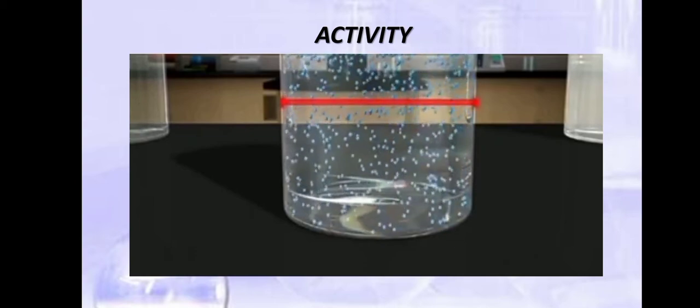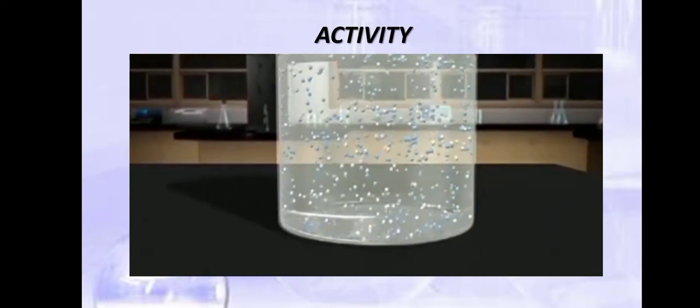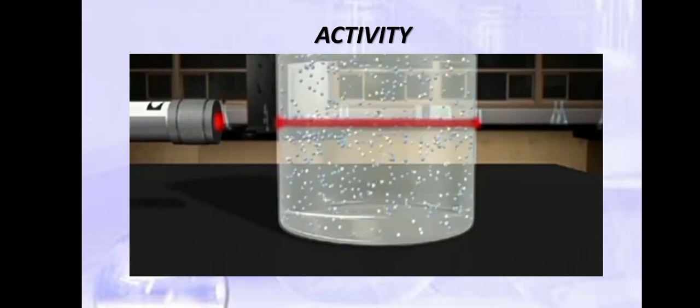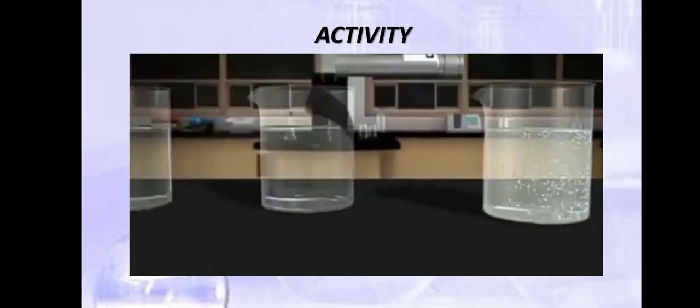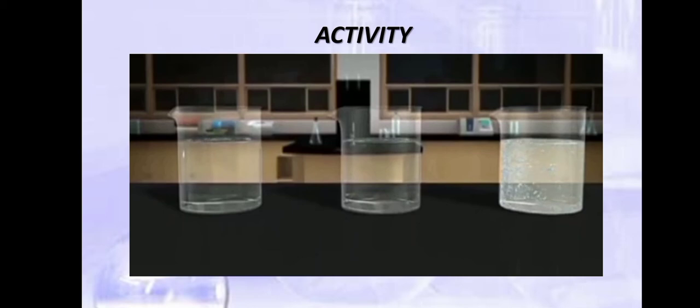Colloid, however, has two phases. The dispersed phase, which is the milk particles, and the dispersion medium, which is the water. In colloid, light will scatter in different directions due to dispersed particles. But in water and in true solution such as the sugar solution, it will pass through without being scattered.